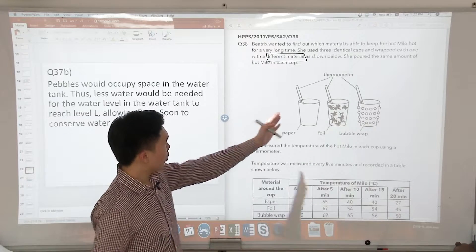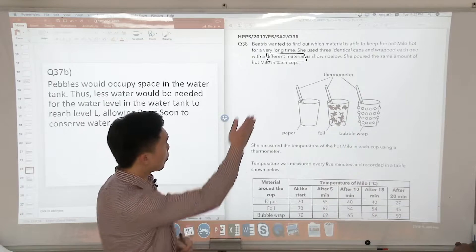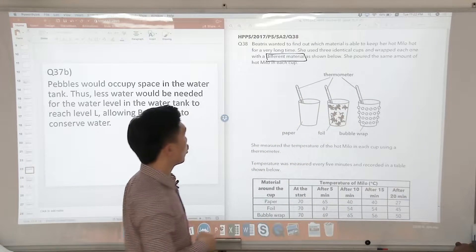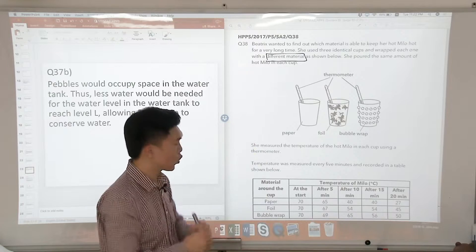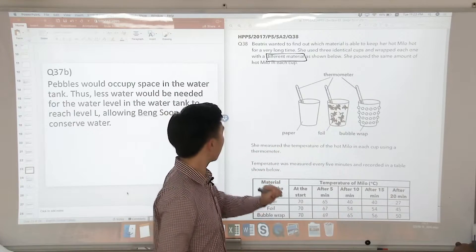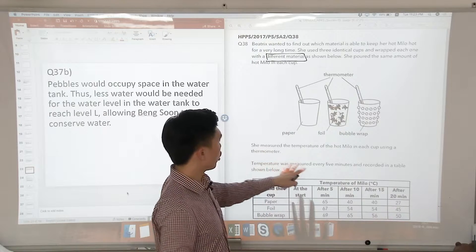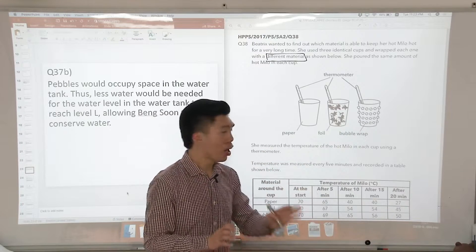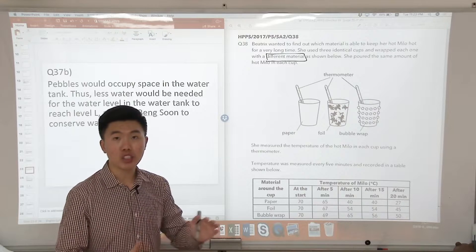If we look at the three different materials here, she poured the same amount of hot Milo into each cup. So the hot Milo is the heat source in this question. And then she measured the temperature of the hot Milo in each cup using a thermometer. Temperature was measured every five minutes and recorded in the table as shown below.